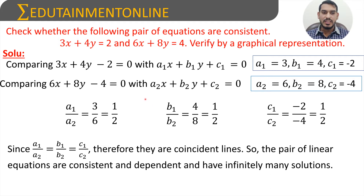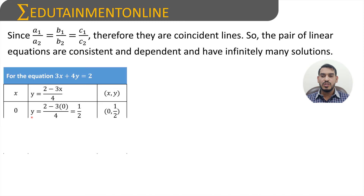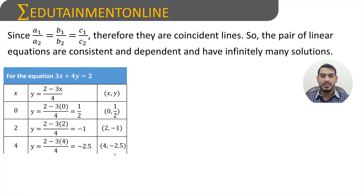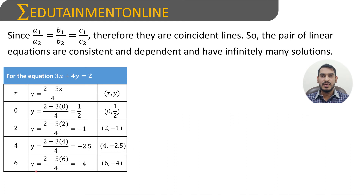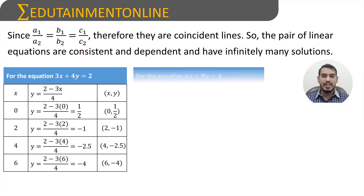These coincident lines will have infinitely many solutions. For graphical verification, taking the first equation 3x plus 4y equals 2 and making y the subject: y equals 2 minus 3x by 4. When x equals 0, y equals 1 by 2, giving point (0, 1/2). When x equals 2, y equals 2 minus 6 by 4 equals minus 4 by 4 equals minus 1, giving point (2, -1). When x equals 4, y equals minus 2.5, giving point (4, -2.5). When x equals 6, y equals minus 4, giving point (6, -4).